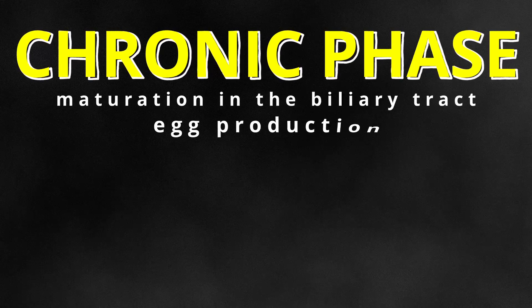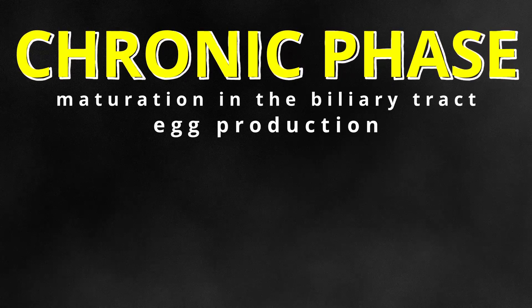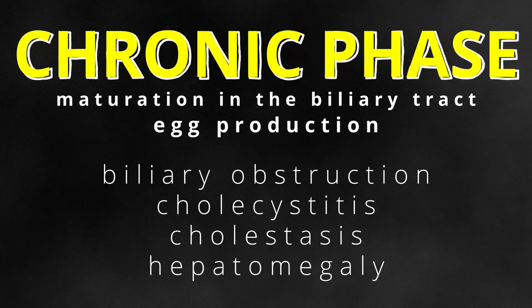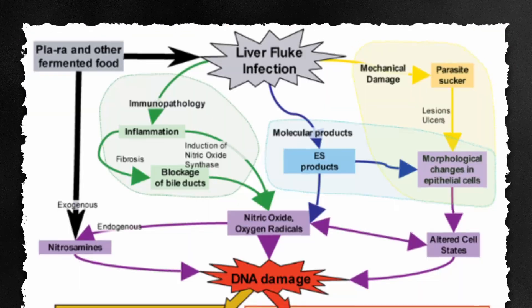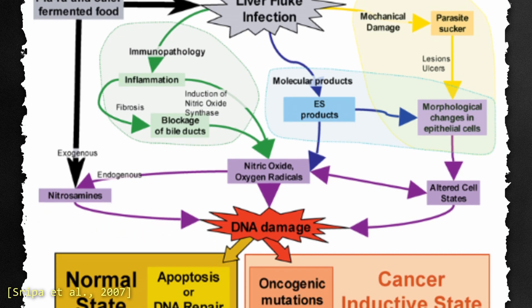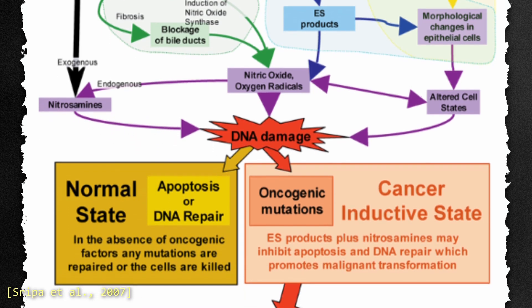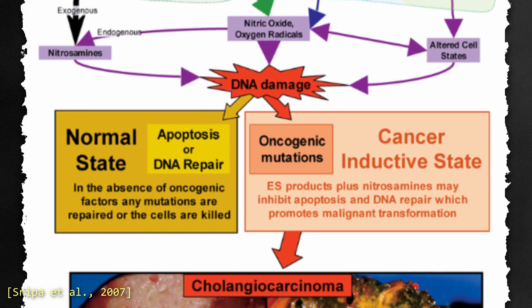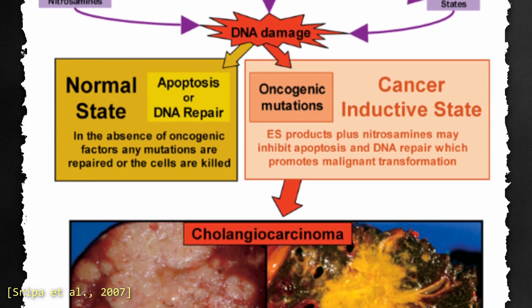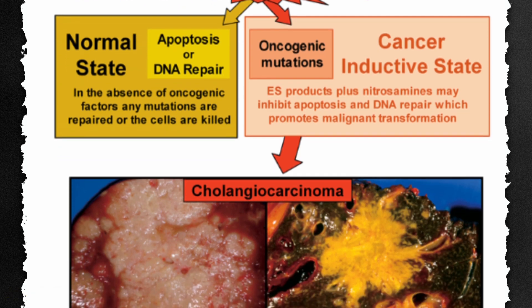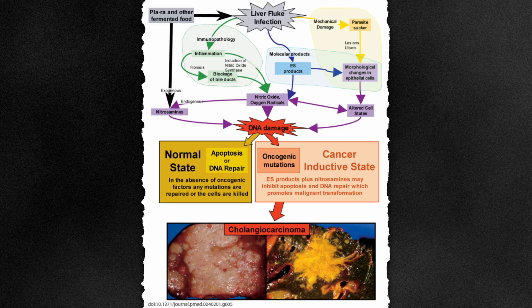During the chronic phase, the adult fluke resides within the biliary tract, leading to more serious issues including intermittent biliary obstruction, cholecystitis or inflammation of the gallbladder, cholestasis or bile flow obstruction, and hepatomegaly. In severe cases, the chronic inflammation can lead to fibrosis and cirrhosis of the liver. It has been established that long-term chronic infections can directly lead to cholangiocarcinoma, or cancer of the biliary ducts. About 10% of people with these chronic infections will develop cholangiocarcinoma. Multiple studies have confirmed the direct link between chronic Opisthorchis and Clonorchis infections and the development of periductal fibrosis and cholangiocarcinoma.